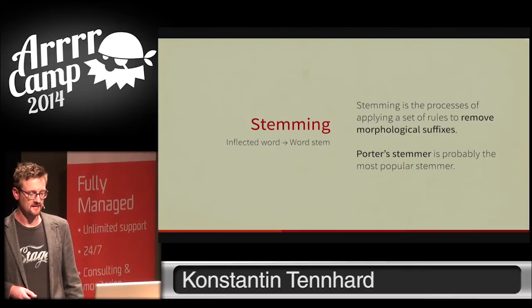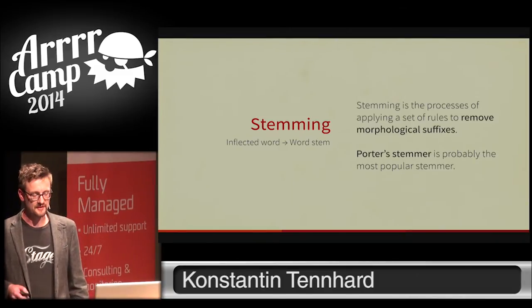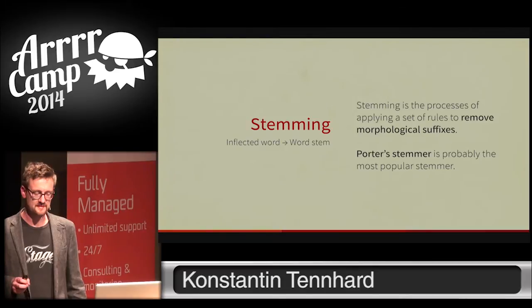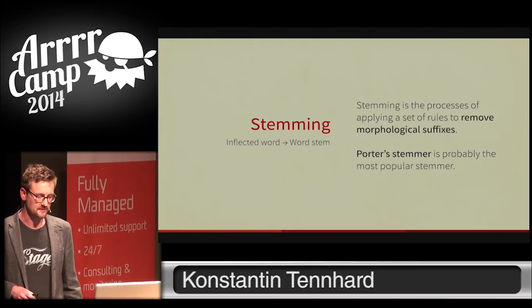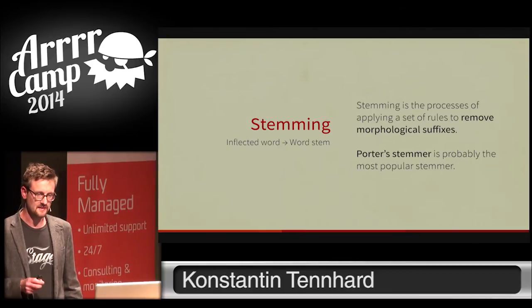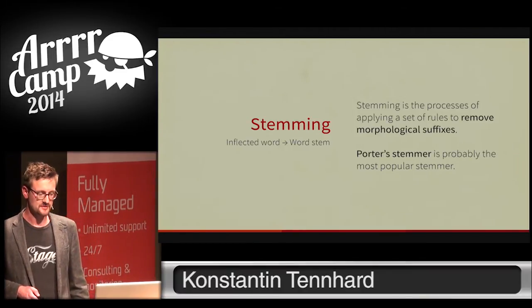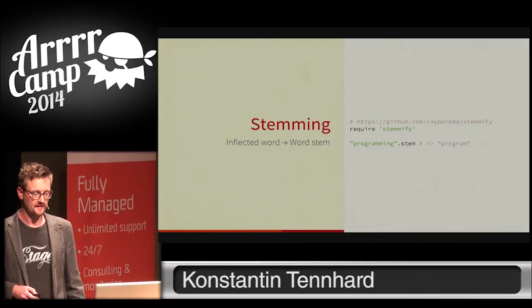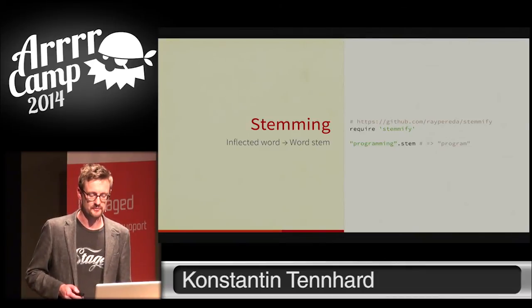One last basic NLP task before moving on: stemming. Stemming is the process of automatically deriving word stems from a given word. The algorithms work by removing the morphological suffix — for instance, in 'negotiation', the '-ion' at the end is the suffix added to the stem. For English, the most prominent algorithm is Porter's stemmer. It isn't part of OpenNLP but there's a Ruby gem for it that acts as a core extension for the String class, providing a stem method.